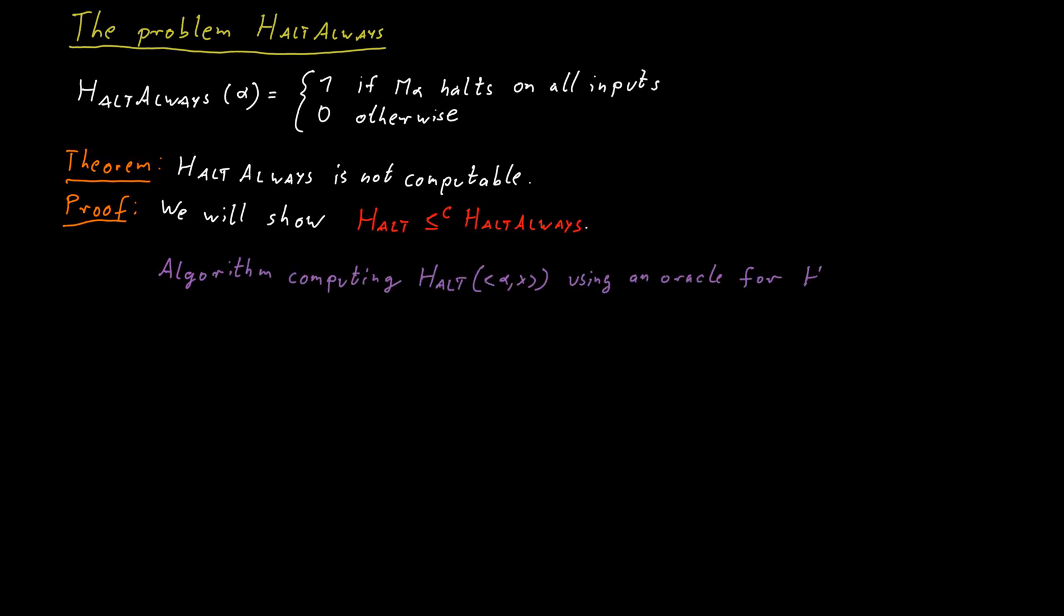we could also compute HALT as follows. We simply construct a Turing machine M that always completely ignores its input and just simulates the machine M_alpha on input X. So again, we are given as input alpha and X, and we construct a machine M that ignores its input and just simulates M_alpha on input X.